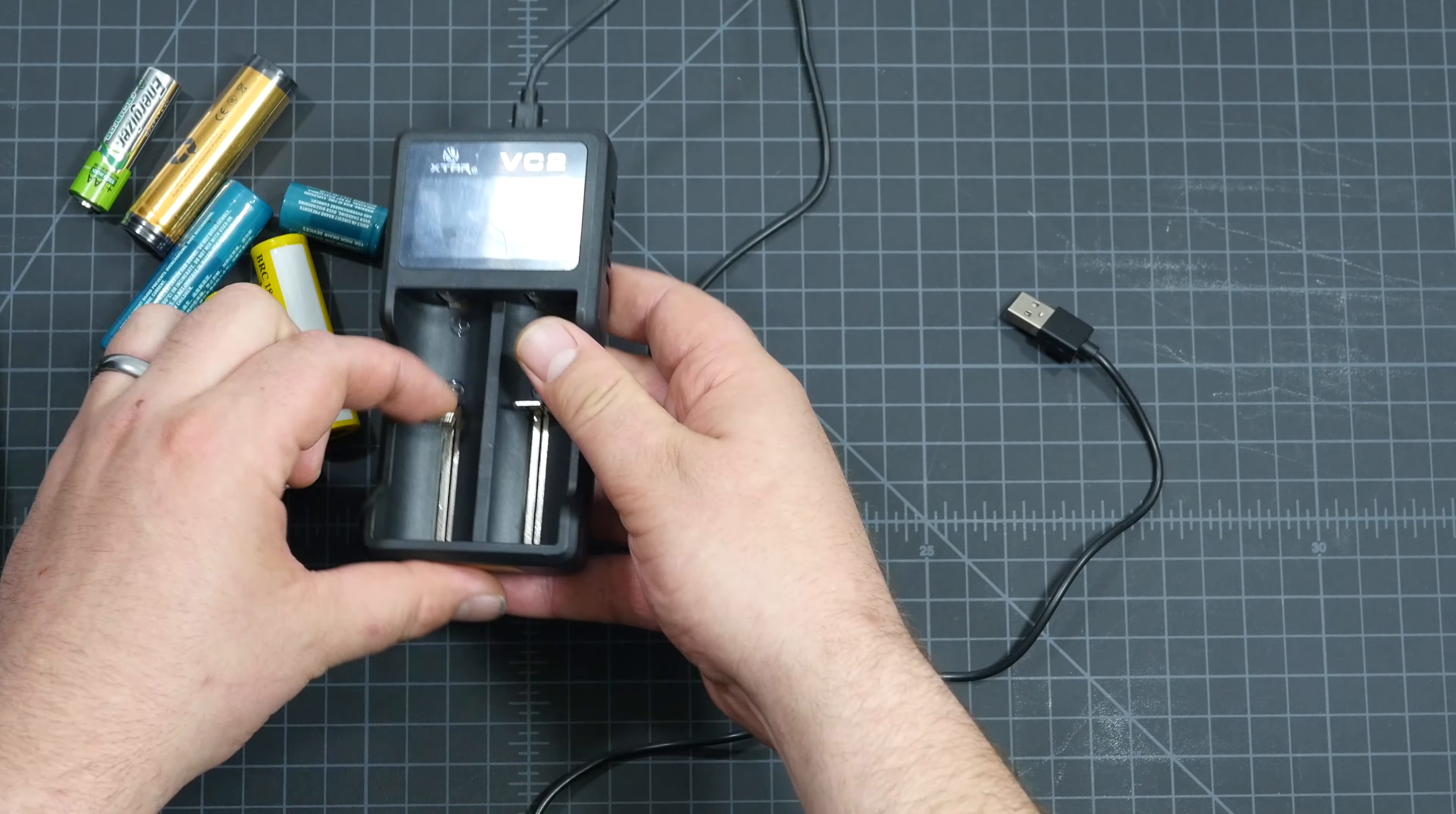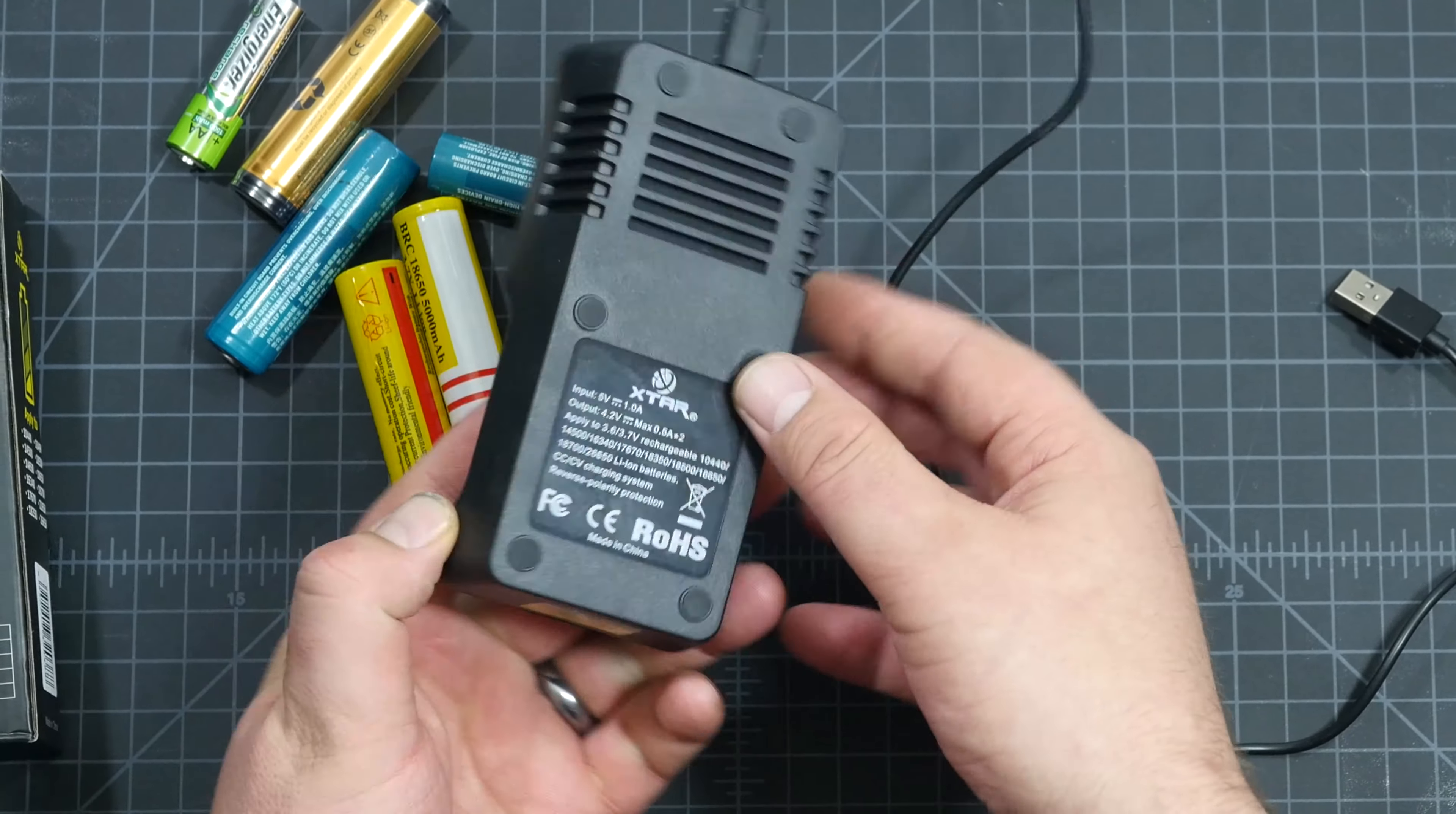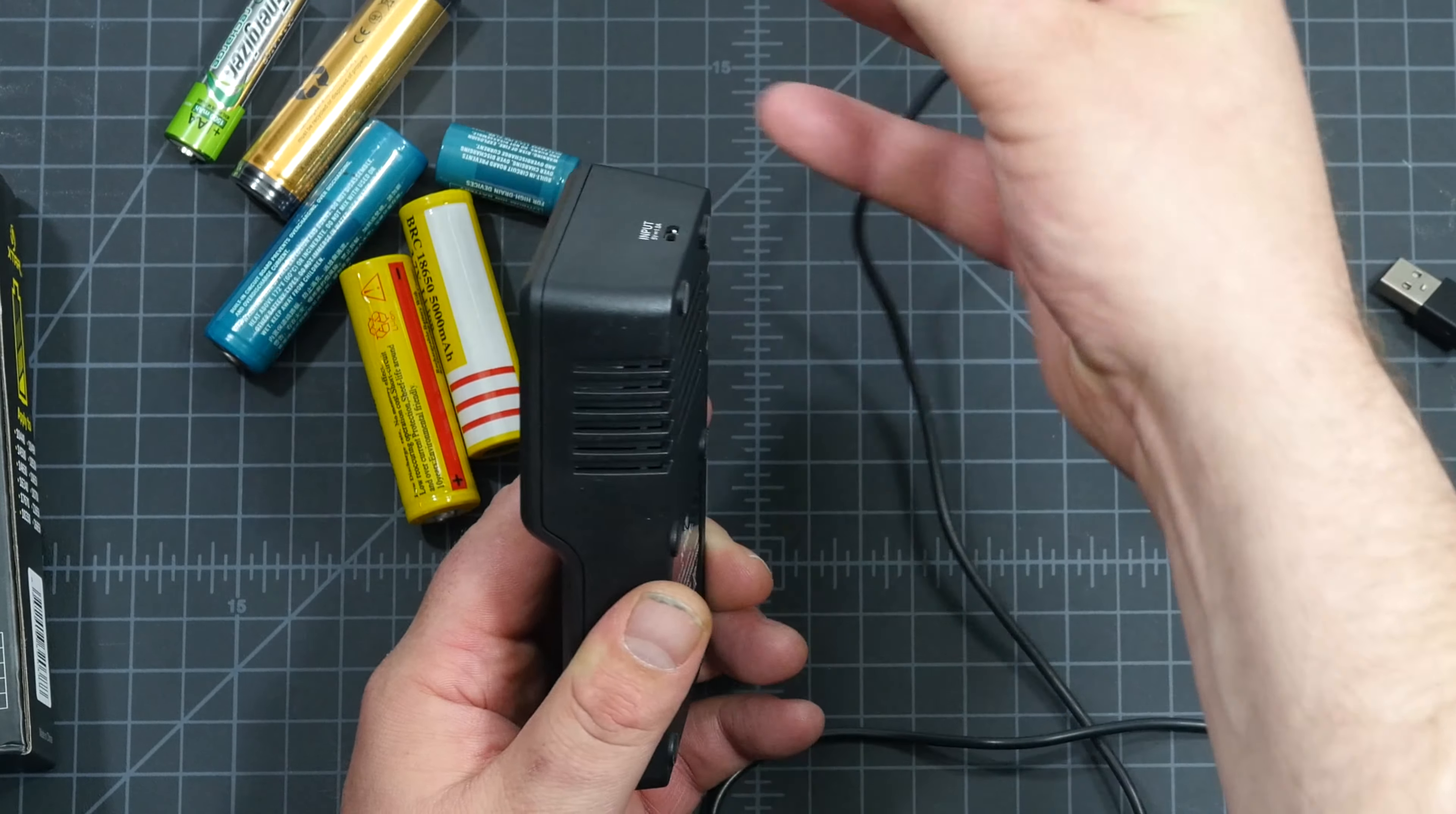So this is the charger. It will charge two batteries at once. We have the plus minus so we know which way it is. We have these nice rubber feet here on the back and we have this power cord.